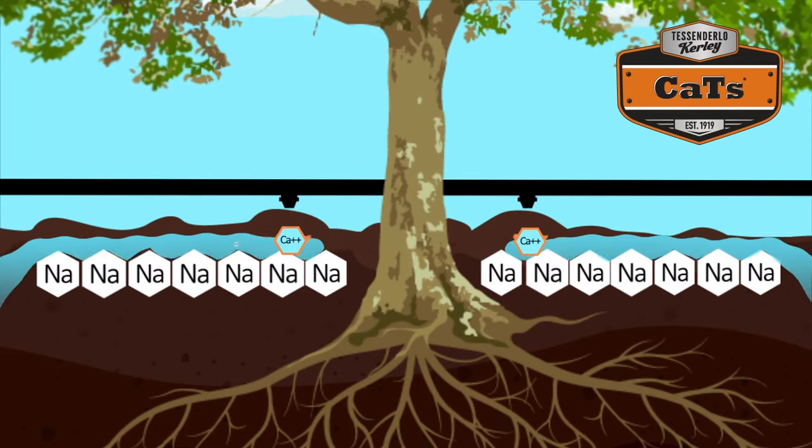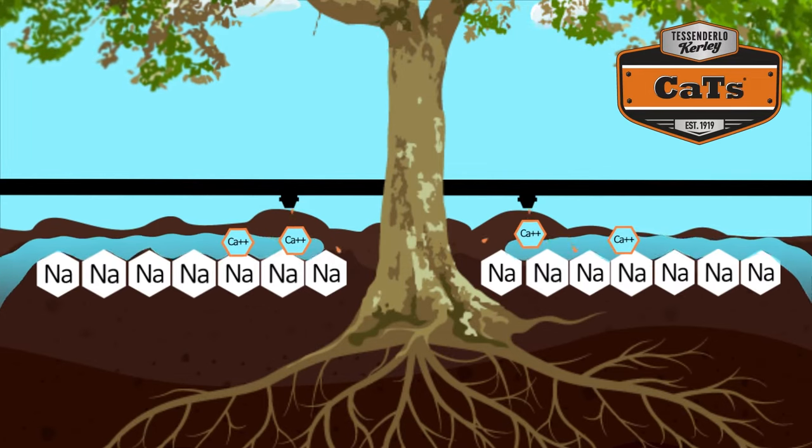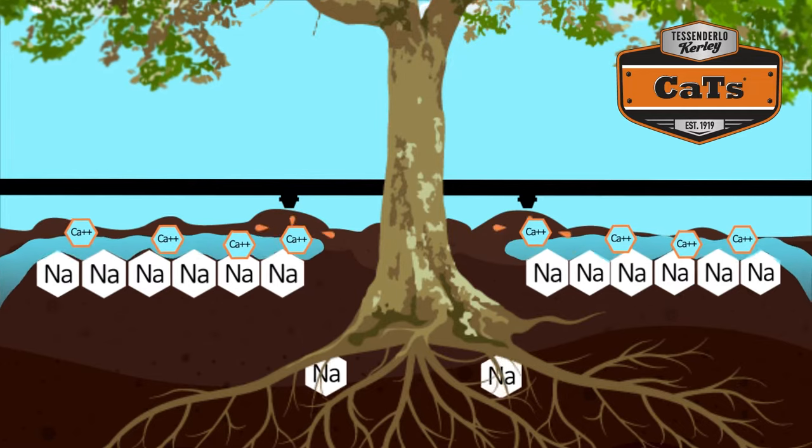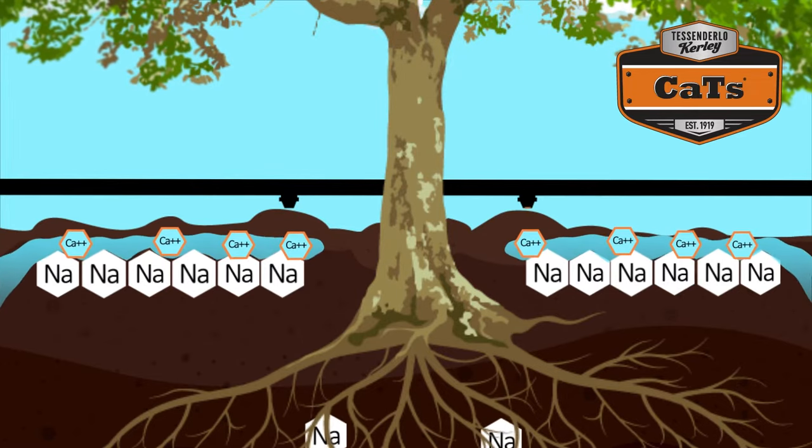CATS can be applied just like any other liquid fertilizer. As CATS is applied through the irrigation water, you ensure that the soluble calcium provided by CATS goes exactly where it needs to go.